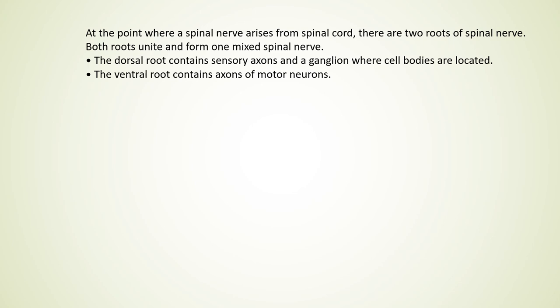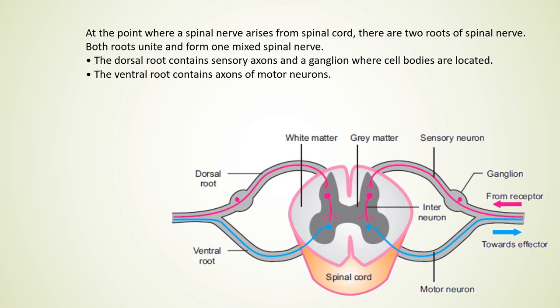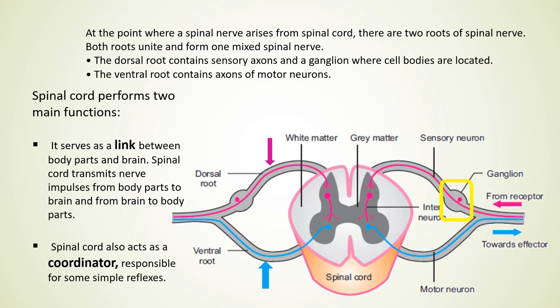There are 31 pairs of spinal nerves that arise along the spinal cord. At the point where a spinal nerve arises, there are two roots that unite to form one mixed nerve. The dorsal root contains sensory axons and a ganglion where cell bodies are located, while the ventral root contains axons of motor neurons. The spinal cord performs two main functions: first, it serves as a link between body parts and the brain, passing information from receptors to brain and instructions from brain to effectors; second, it acts itself as a coordinator responsible for simple reflex actions.